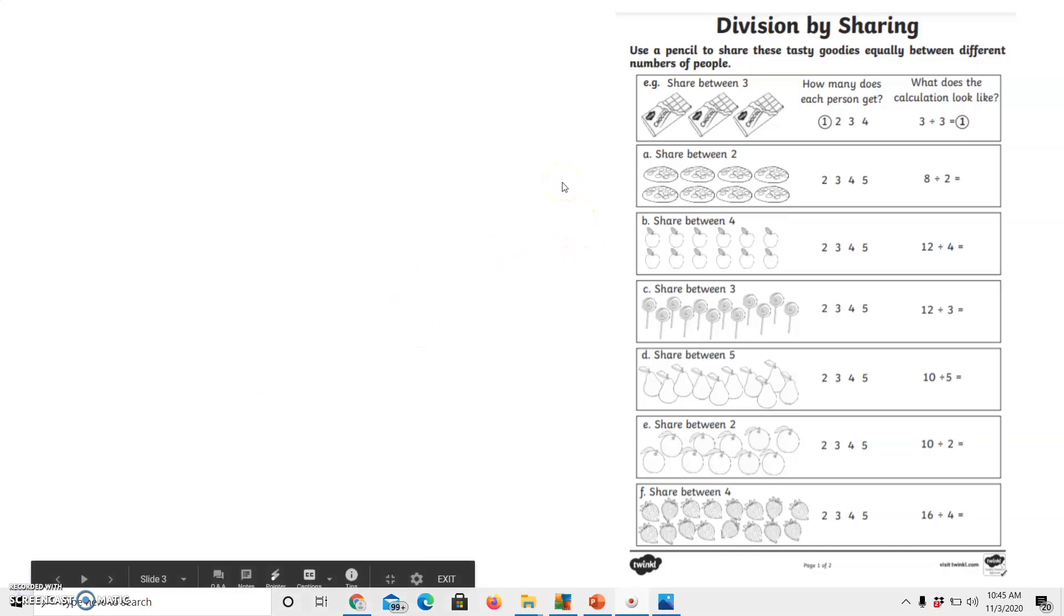So for your homework, this is your page for today. Division by sharing. It says use a pencil to share these tasty goodies equally between different numbers of people. So it tells you, this one's for your example, share between three people. So it just says three, but up here it says people. So you're going to share between three. And so here it says, how many does each person get? And you circle that amount, and then you say, what does the calculation look like? Three divided by three equals one. So super easy. So you're going to do all of them the same way.